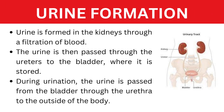Urine is formed in the kidneys through a filtration of blood. The urine is then passed through the ureters to the bladder, where it is stored. During urination, the urine is passed from the bladder through the urethra to the outside of the body.